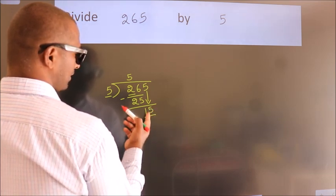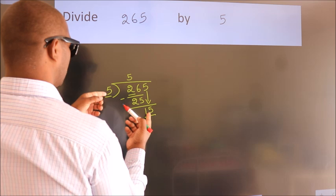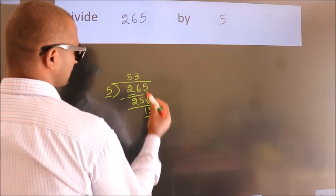So, 15. When do we get 15? In the 5 table. 5 threes, 15.